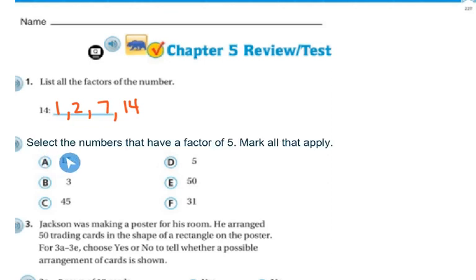Number 2 says to select the numbers that have a factor of 5 and mark all that apply. Well, if it's got a factor of 5, then we know it's going to end in 5 or a 0. So 15 ends in 5, 3 does not. 45 ends in 5, 5 ends in 5, 50 ends in 0, 31 does not. So those are all the numbers that have a factor of 5.